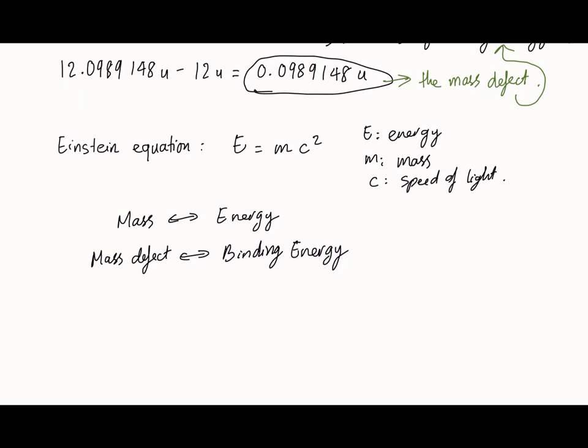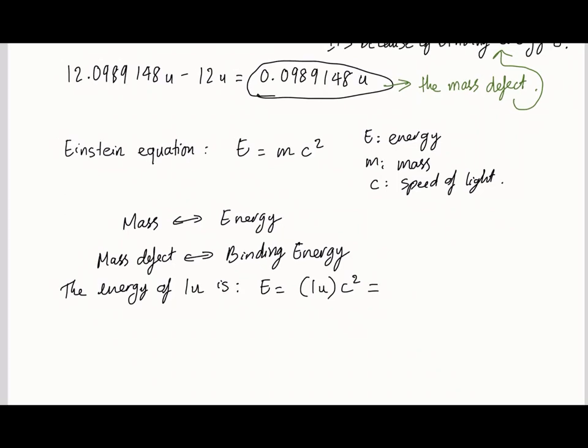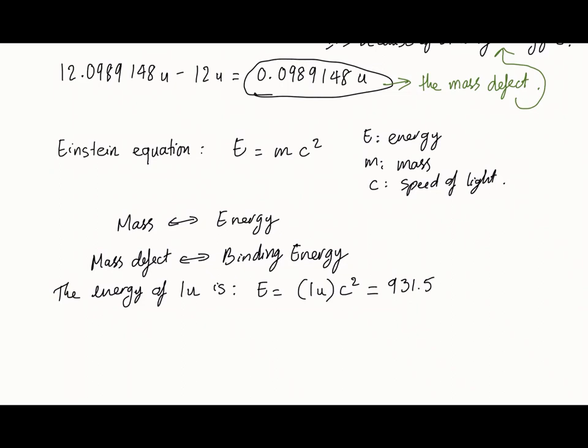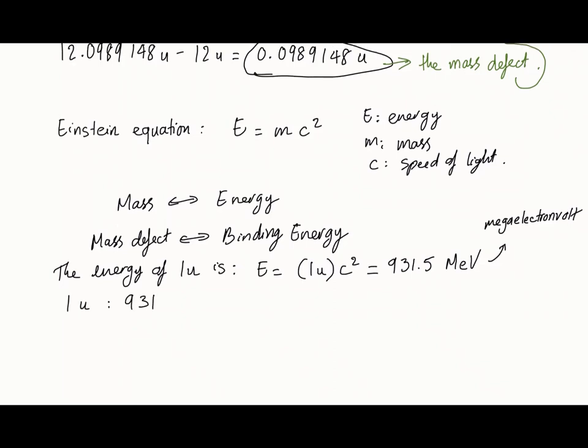So E equals mc squared. Now say you have your mass equal to one atomic unit. 1u times C squared. Now if you look up the speed of light and do the unit conversion, you will get a result of 931.5 mega electron volts.